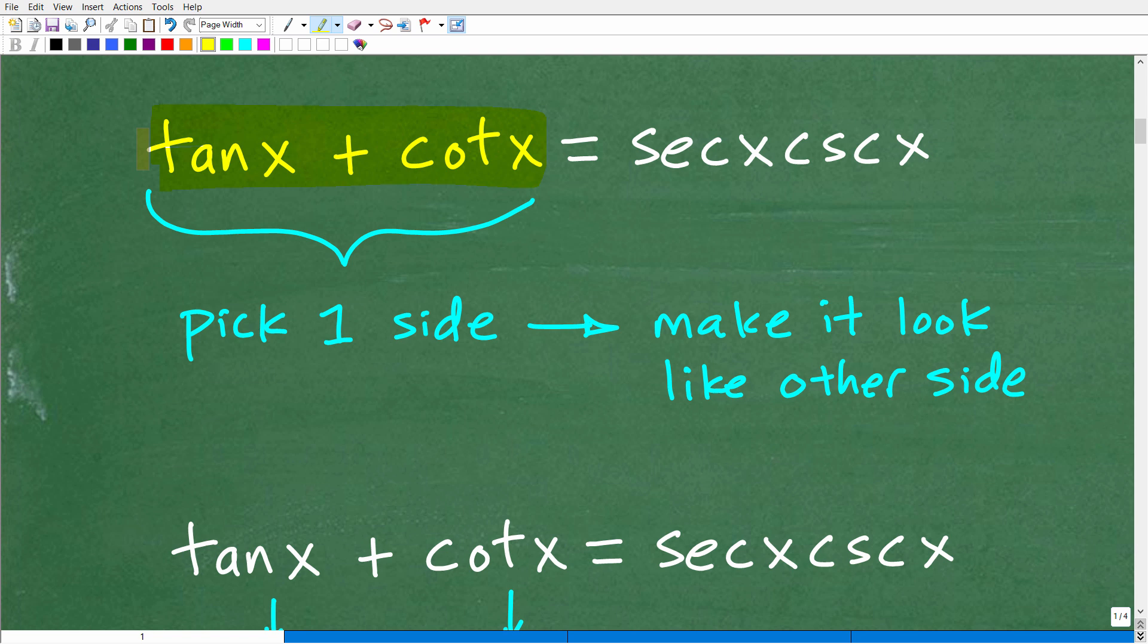So I'm speaking in general terms here because there's always exceptions to these kind of general rules. So what I'm going to do is I'm going to take this side, okay, this tangent X plus cotangent X, and I'm going to make it look like this side. So I'm going to be working on the left-hand side. I'm going to be doing all different sorts of things here. And my goal is I'm going to keep working until eventually I get this down to look like this, which is secant X times cosecant X.